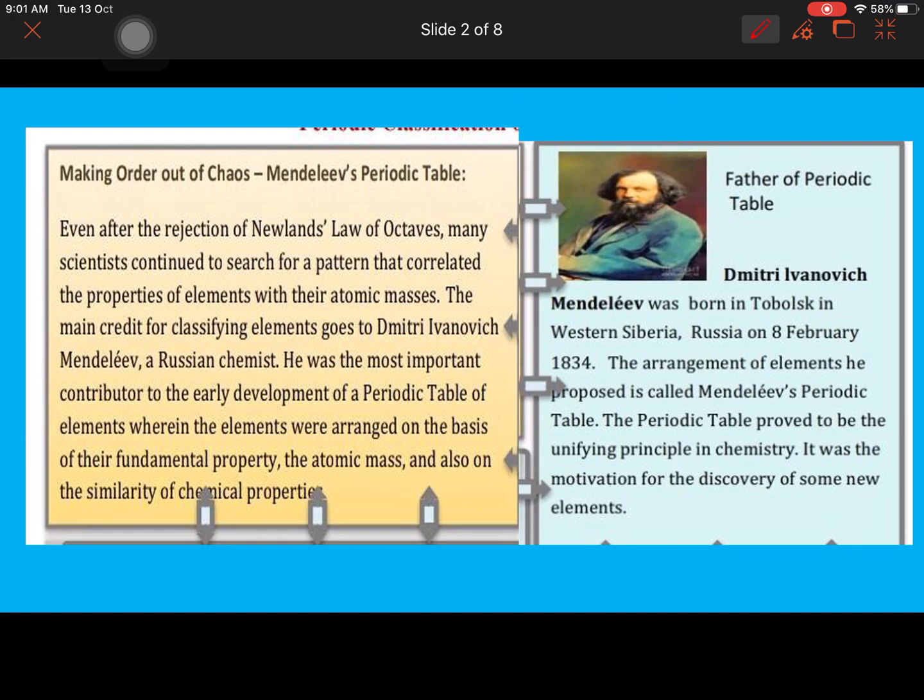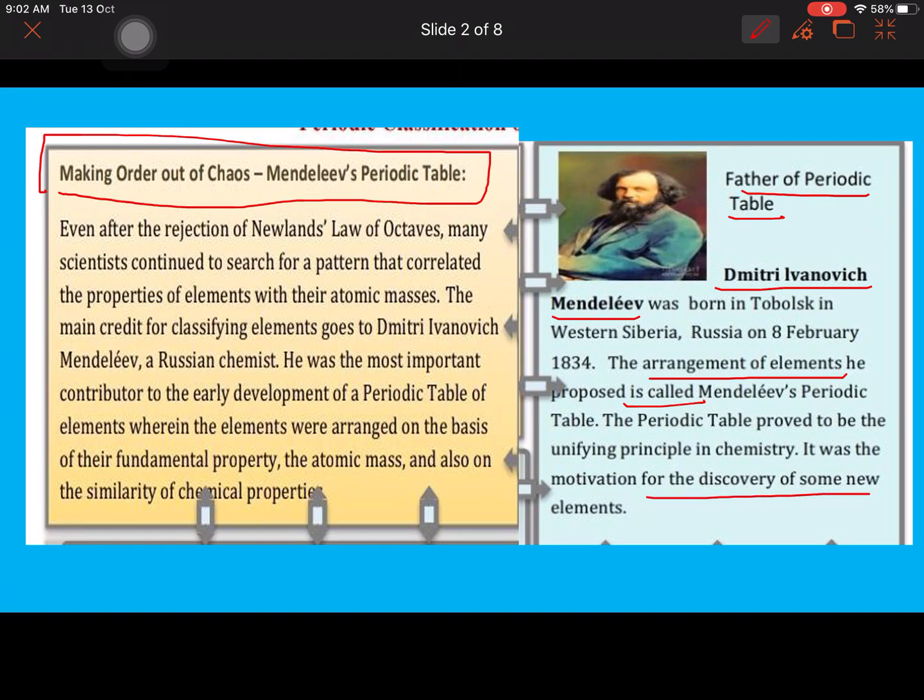We have discussed Dobereiner's and Newlands' classifications. Today we'll discuss Mendeleev's periodic table. Mendeleev's periodic table is prepared by Dmitri Ivanovich Mendeleev. He is also known as the father of the periodic table because the arrangement of elements proposed by him were very unifying in chemistry and it proved to be the motivation for the discovery of some new elements.